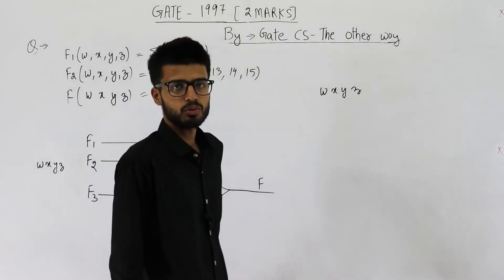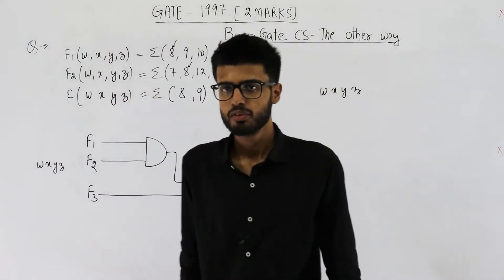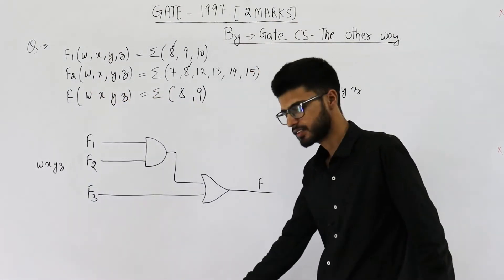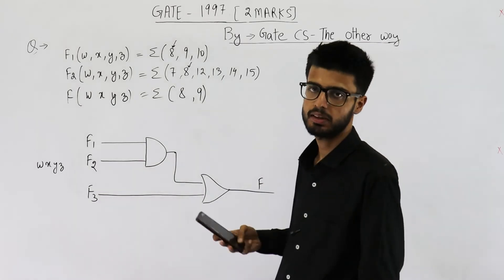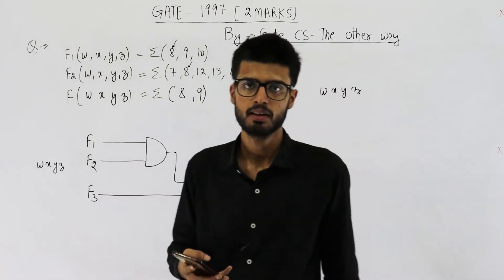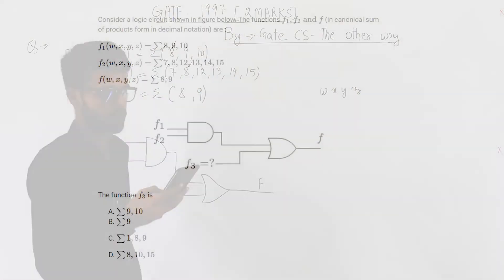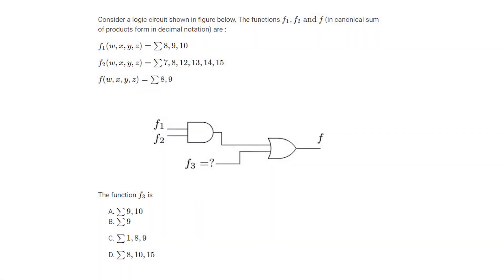Welcome back people. This question is again from the GATE exam of 1997 and is for two marks. Let me read out the statement, then I will provide its solution. Consider a logic circuit shown in the figure below. The functions F1, F2, and F in canonical SOP forms in decimal notation are given.